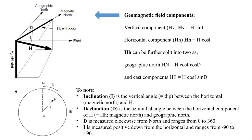Earth's magnetic field is also known as the geomagnetic field. The components of the geomagnetic field are mainly categorized into two: the vertical component, given as HV, calculated by the formula H sine of inclination, and the horizontal component, given by H cosine of inclination. The horizontal component is further split into the geographic north component and geographic east component.